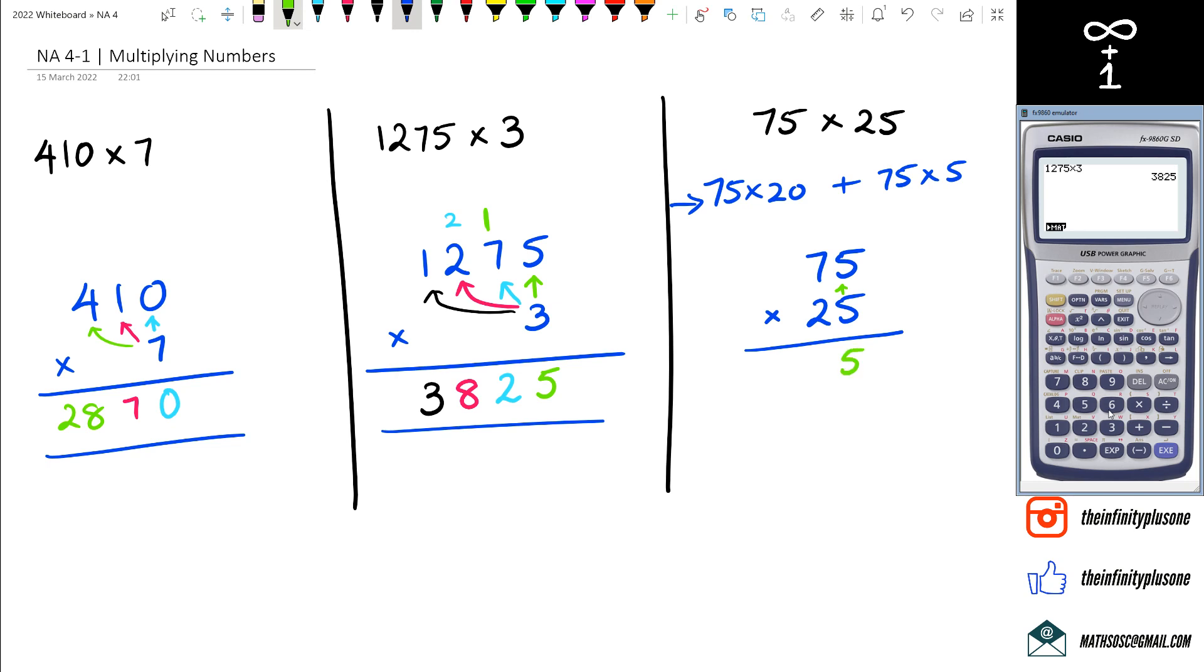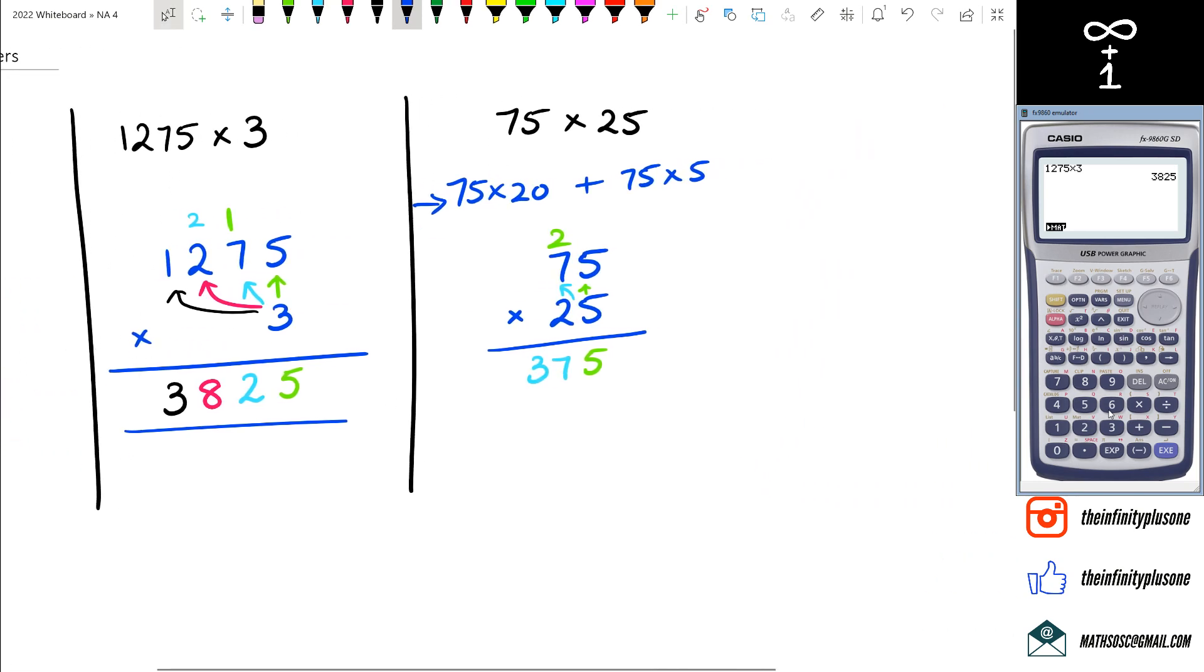So first I'm going to have 5 times 5, which is 25. I'm going to put that 2 on top. Next I've got 5 times 7, so that's 35 plus 2, which is 37. I'm just going to go slightly here and I want to show you guys, all I've done here right now is the 75 and 5. So that's what that 75 times 5 is. So that's actually equal to 375.